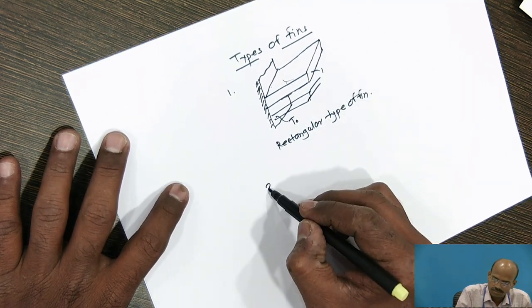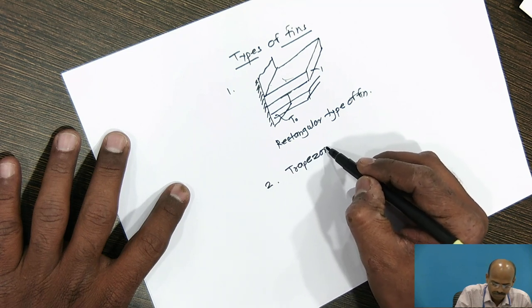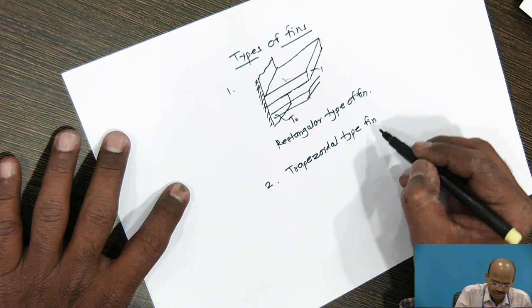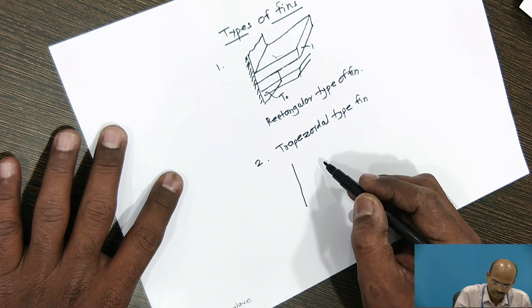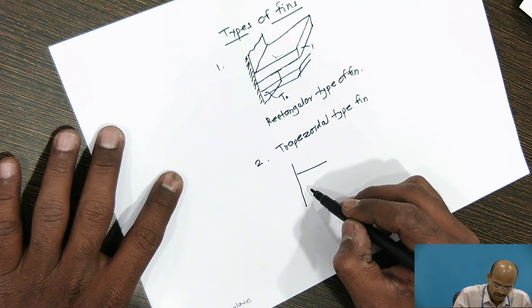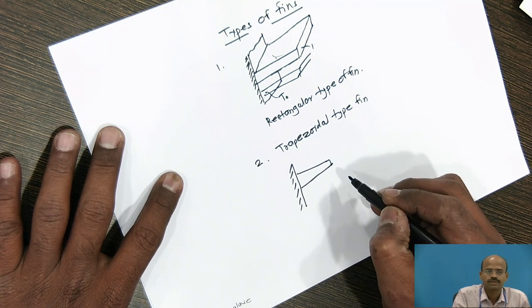In second type of fin, that is a trapezoidal type fin. On this base surface, instead of rectangular cross section, we can connect the trapezoidal fin.